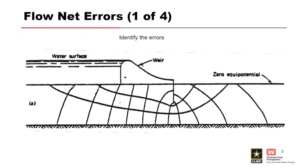Are there any takers? I'm going to have Greg in the back passing around the microphone. Here's an example of a flow net underneath a seepage weir, or maybe at a spillway, something like that. Can anybody see any issues with this flow net that they want to point out?